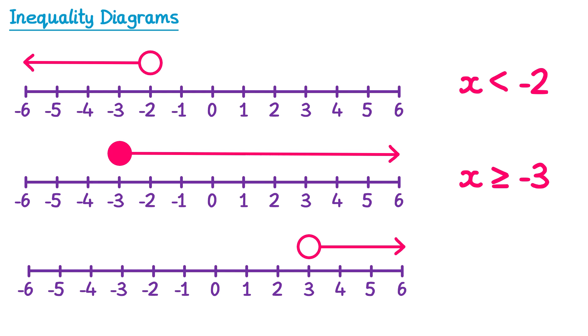For this final one we start with x. The numbers are to the right, so they are greater than 3, and the circle is not shaded, so it's just a regular greater than symbol, and the number that the circle is above is 3.